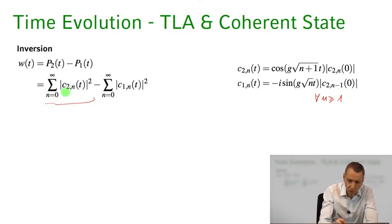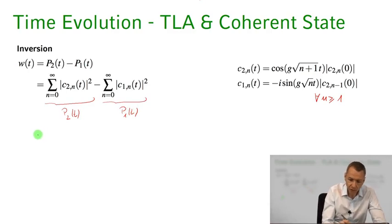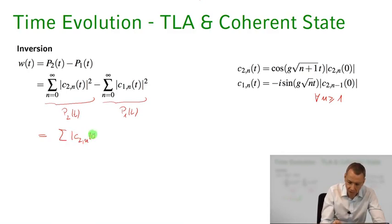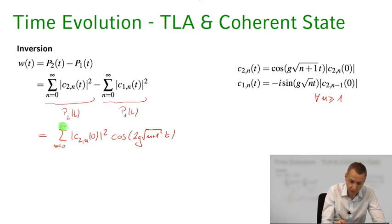We calculate the excited state probability: we sum over all populations where the atom is in the excited state with n photons, summing from n equals 0 to infinity. This gives us p2 of t, and the last term gives us p1 of t. If you put the Rabi oscillations in and do that calculation, it's very simple to show that what you get is a sum over |C2,n(0)|² times cosine of 2g√(n+1)·t, with n running from 0 to infinity.